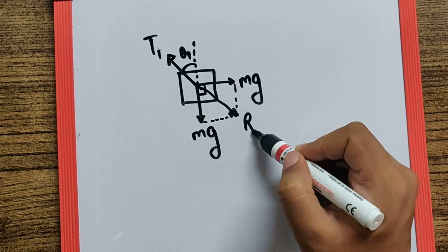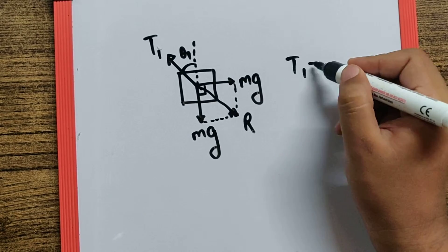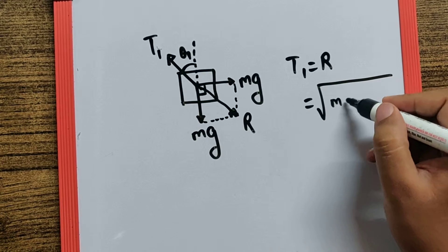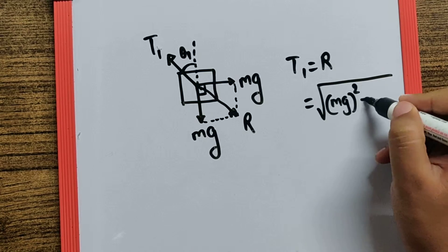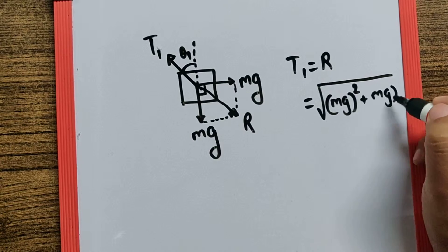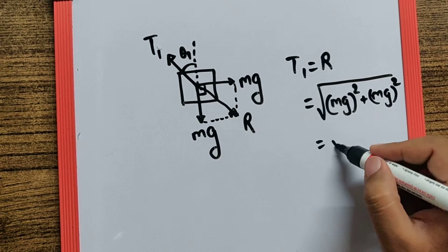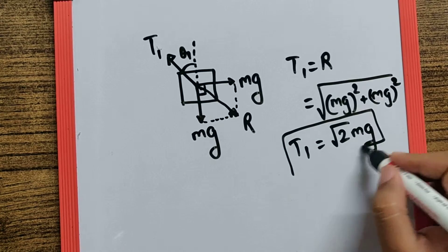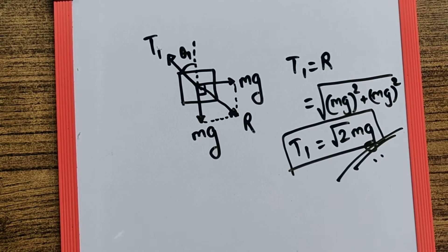So I can say T1 is equal to R, where R is going to be the root of Mg squared plus Mg squared, making it as root 2 Mg. And so therefore tension as root 2 Mg is your final answer.